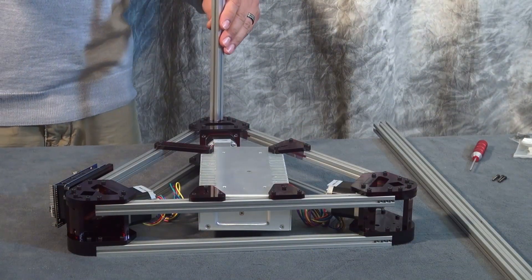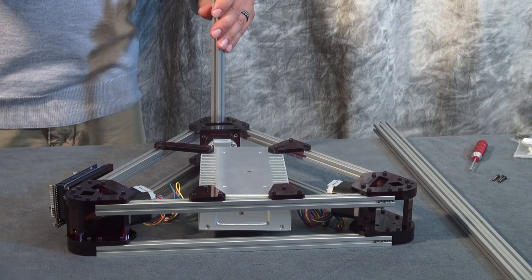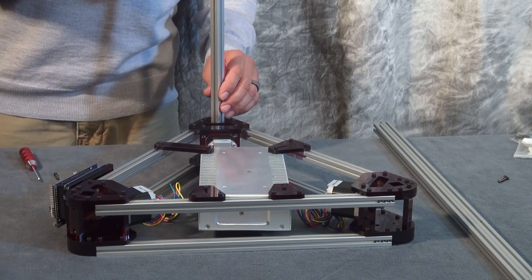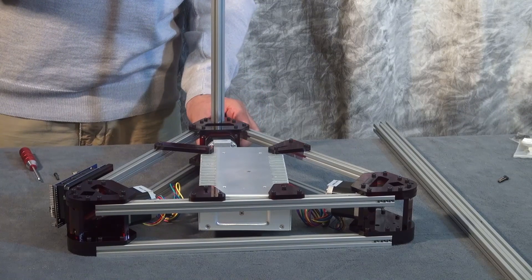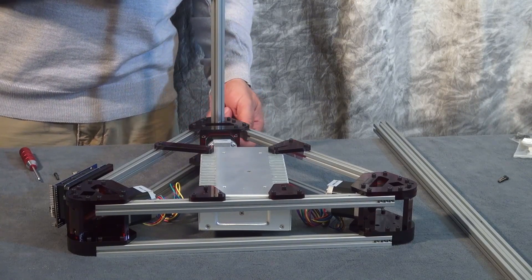First, you'll insert your side post into the first assembly area here. Your M3 20mm bolt will screw in from the bottom side up into your aluminum post.